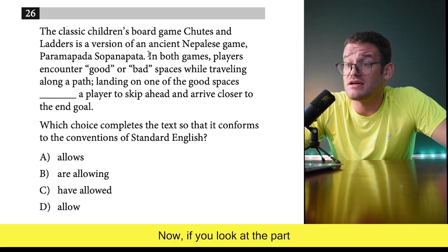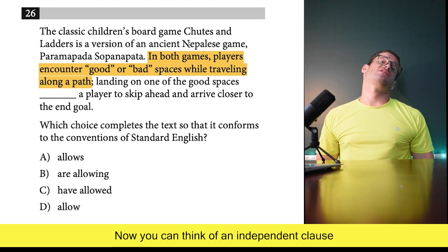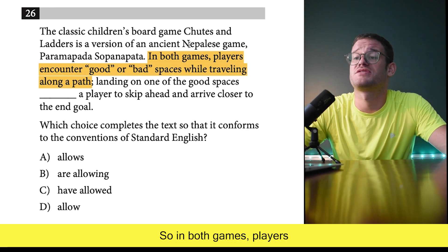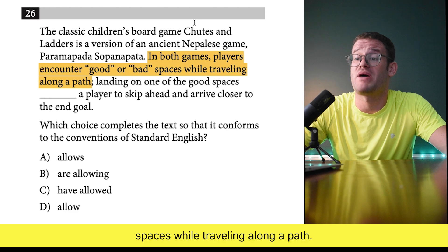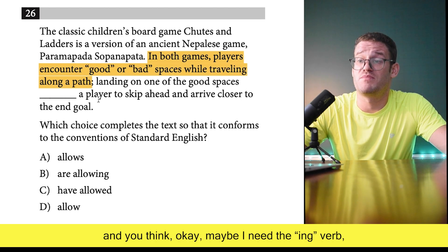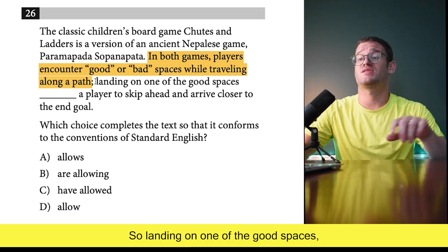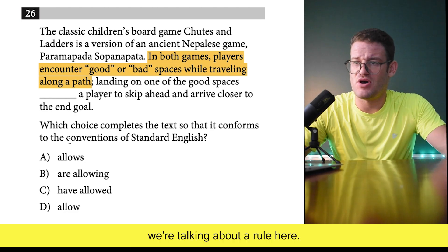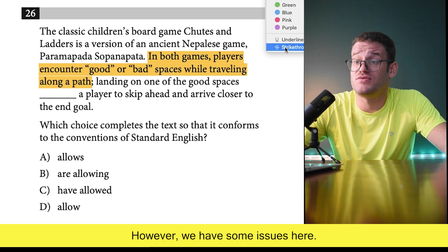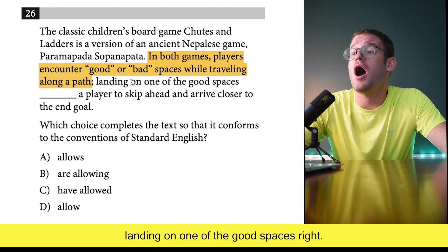I haven't yet made a video on punctuation — that will be coming soon. The major use of a semicolon is to connect two independent clauses. A semicolon is essentially like a period. In the previous sentence you have 'traveling along a path' and you might think you need an '-ing' verb. But here we're just talking about another true statement of fact about the rules, so it seems like we need simple present tense again.